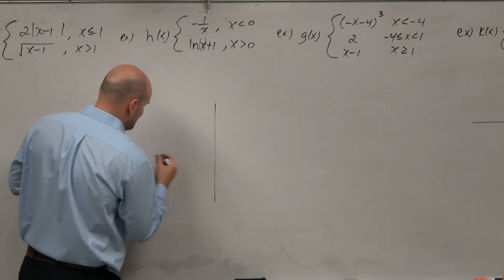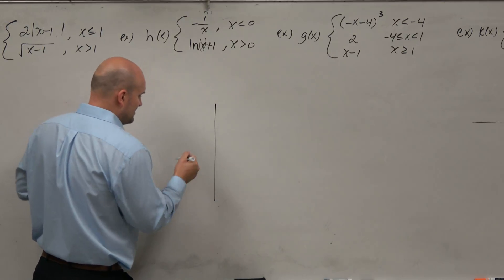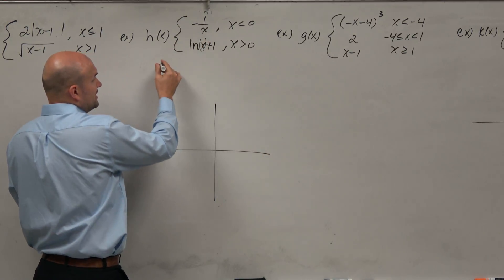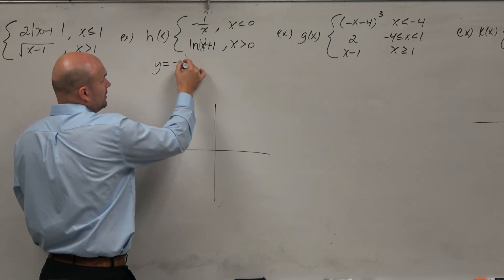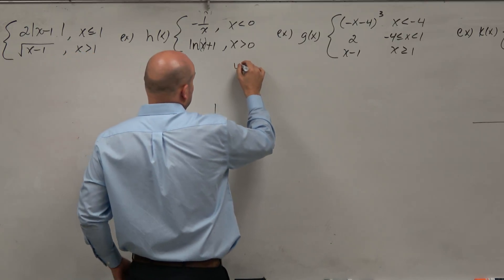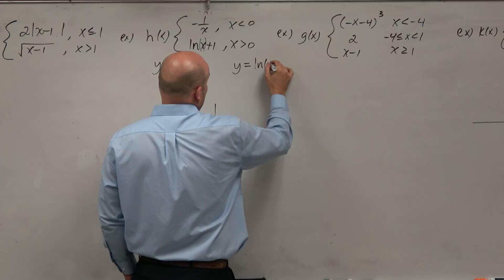To graph these, we basically have two equations or two functions that we need to graph. The first one is y equals negative 1 over x, and we have to graph y equals ln of x plus 1.